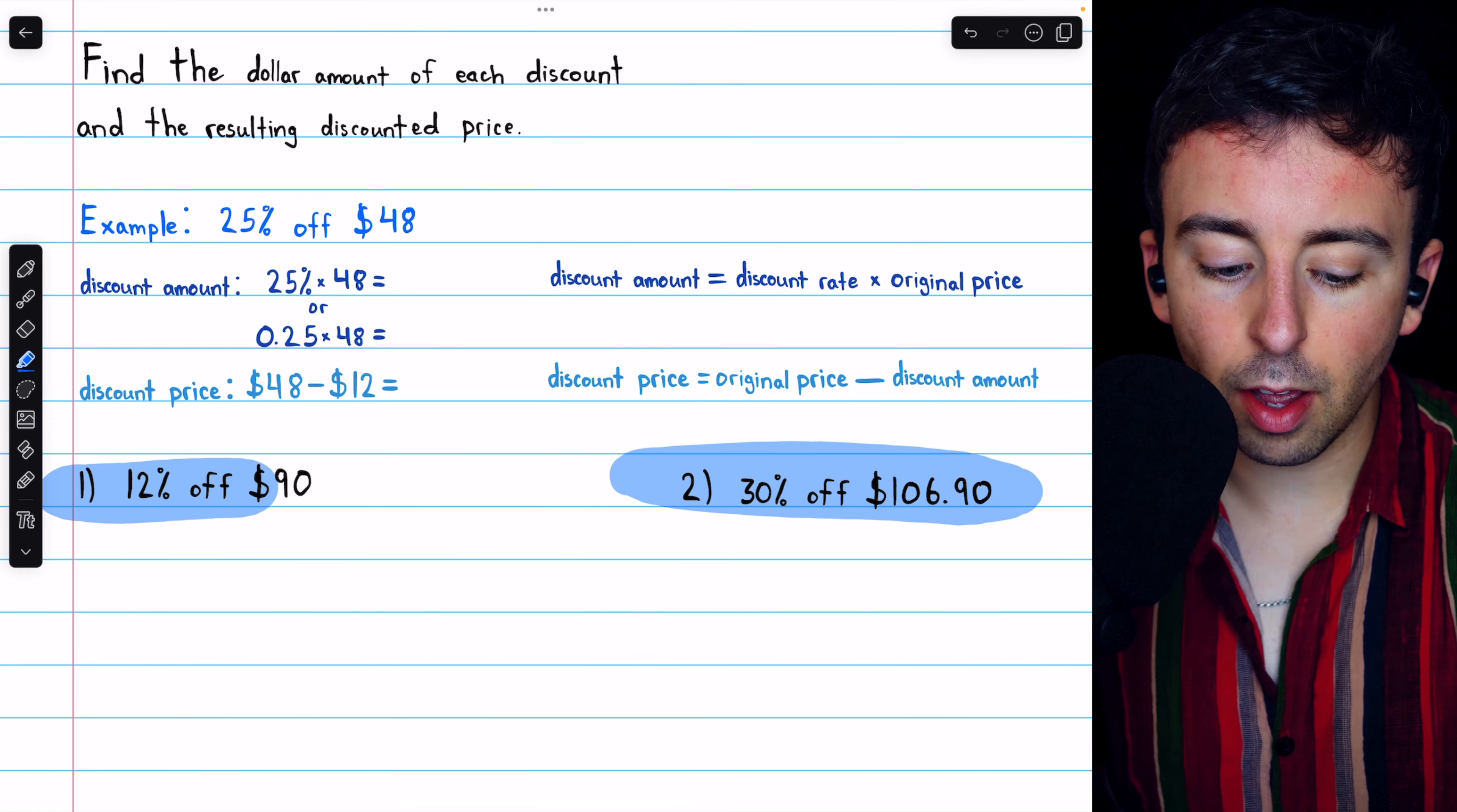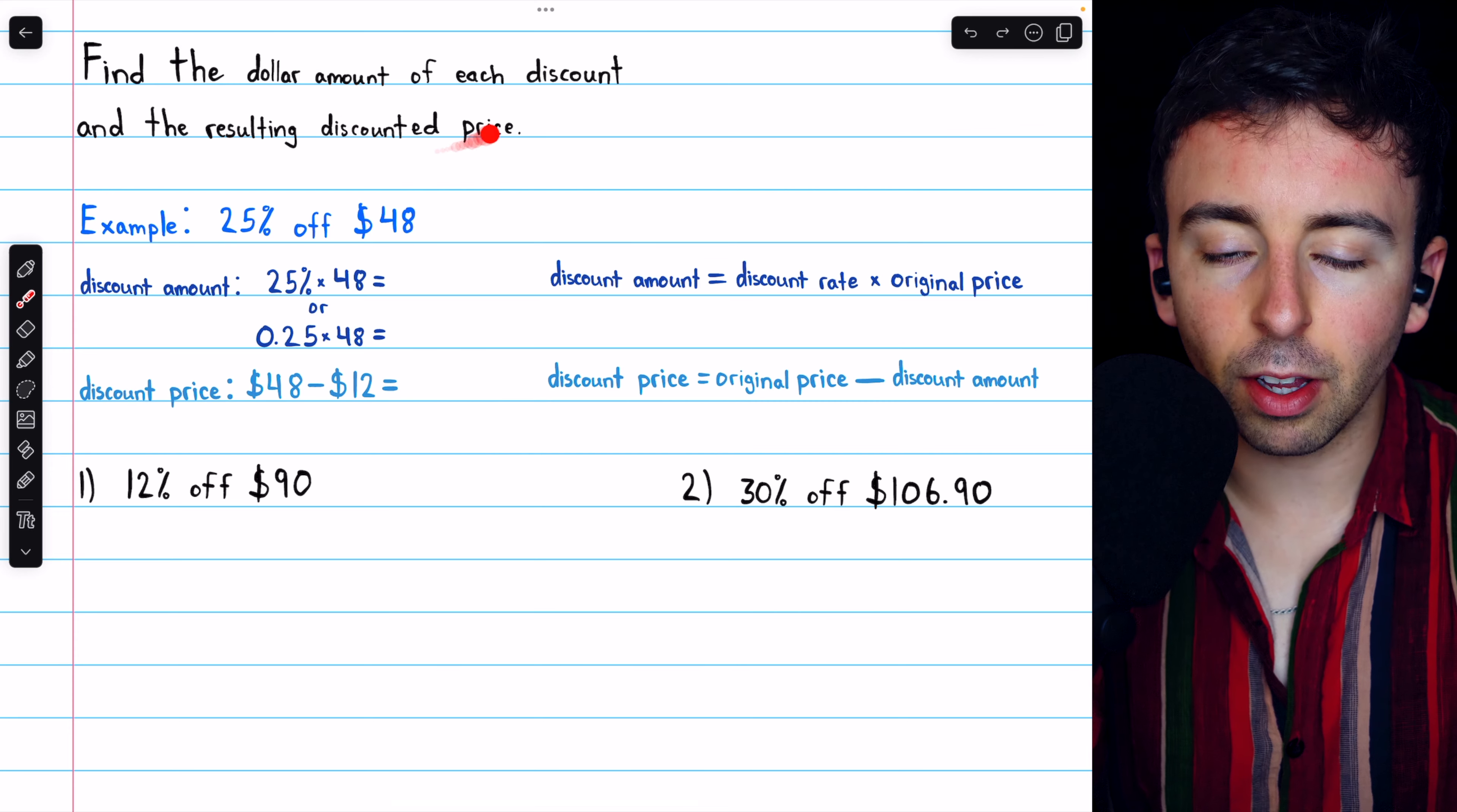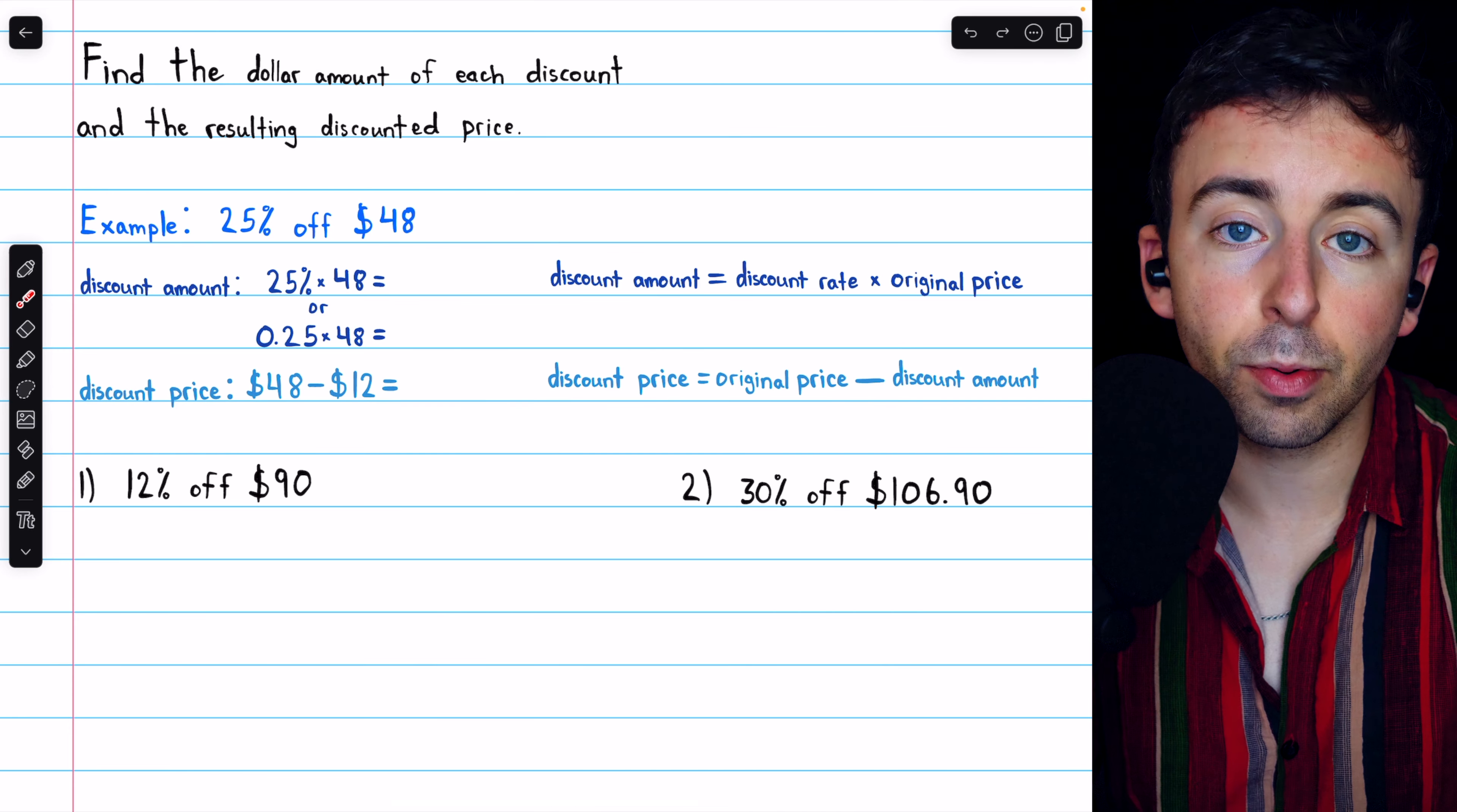Let's solve these two problems of finding the dollar amount of each discount and the resulting discounted price. Here's an example of how to solve a problem like this.